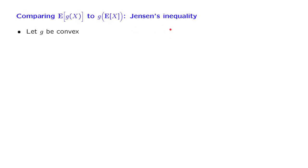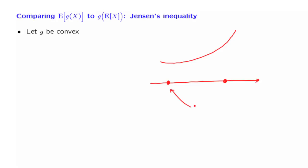Jensen's inequality applies to the special case where g is a convex function. I'm going to define more precisely what it means to be convex shortly. But in terms of a picture, it's a function that has this kind of shape — it tends to curve upwards. So let us look at a simple example. Suppose that x is a random variable that can take two values with equal probability, both with probability 1/2. This is our function g of x.